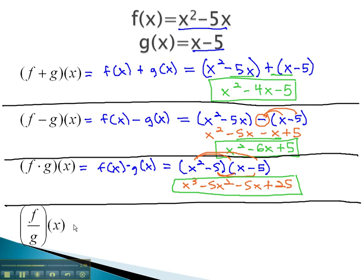Division is the other operation to consider, where we take f of x and divide by the g of x function. By using parentheses, f of x is equal to x squared minus 5x over g of x, which is x minus 5.